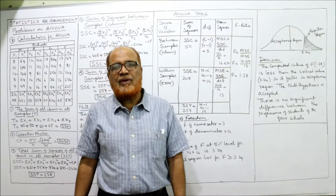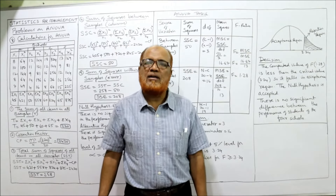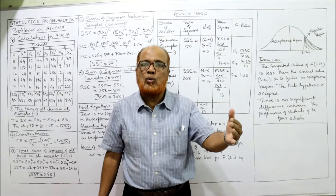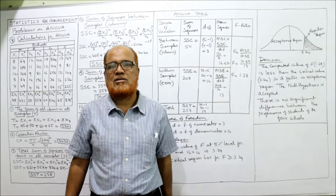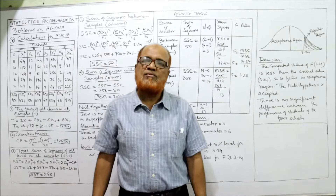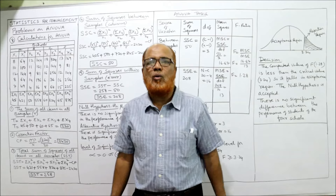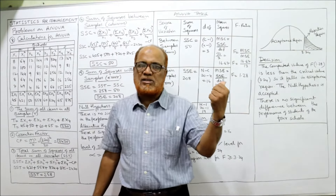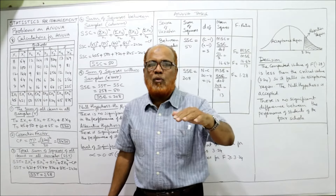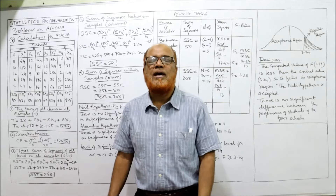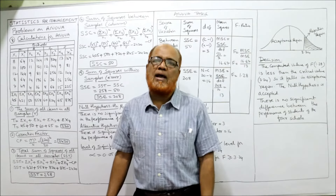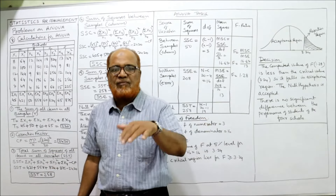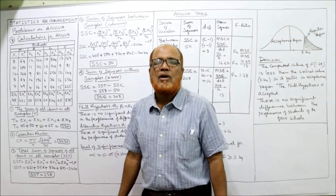ANOVA has wide application in research. In a number of cases, a researcher wants to find out whether the mean of more than two samples are same or not. It will not be specified in the problem that it is ANOVA — you have to identify it. If only two samples are given, apply T-test or Z-test; if more than two samples are given, apply ANOVA.